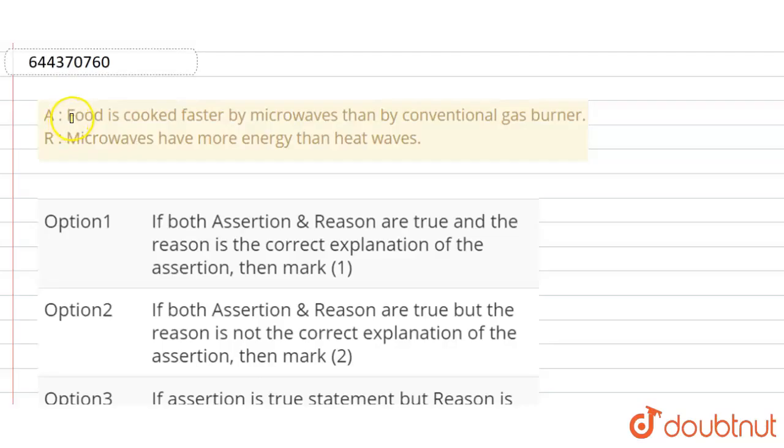Hello everyone, this is an Assertion-Reason type question. Assertion: Food is cooked faster by microwaves than by conventional gas burner. Reason is microwaves have more energy than heat waves.